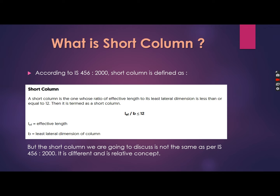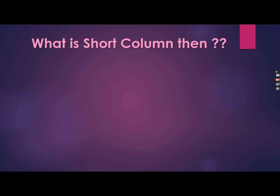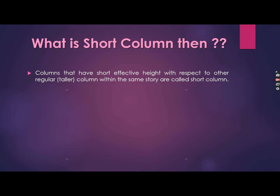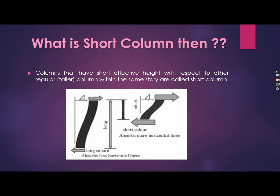However, the column we are going to discuss in this session is not the same as defined in IS456 2000 — it is a different but related concept. Short columns that have a short effective height with respect to other regular columns within the same story are called short columns. For example, if there are two columns — column A and column B — in a story having different heights, and column B is shorter than column A, then column B is a short column.